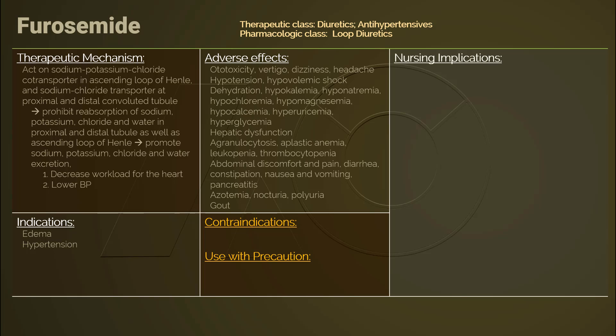While the adverse effects described earlier are commonly shared among diuretics, being a loop diuretic, furosemide is also ototoxic. In other words, ototoxicity is a major adverse effect unique to furosemide, which can lead to reversible or permanent hearing loss.